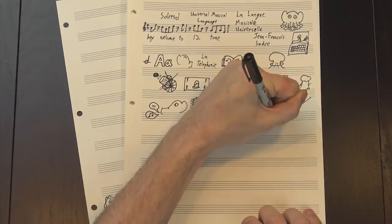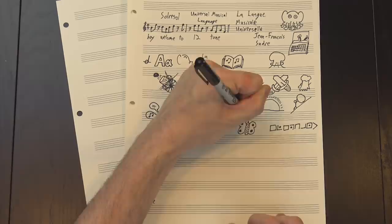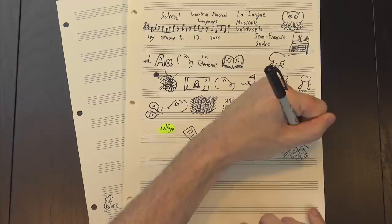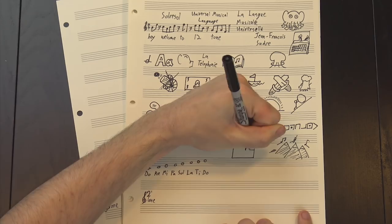To do this, he turned to a system of musical notation known as solfege. This is that do-re-mi stuff Julie Andrews was singing about. Well, almost. In the sound of music, the notes are do-re-mi-fa-sol-la-ti-do, which is the English method, but most other countries in Europe use si instead, and since Soudre was French, that's what he did.